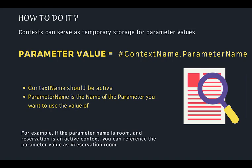Rule number one: it must be an active context. If it is not an active context, your parameter value will go blank — it won't be able to pick up the parameter value you're trying to reference. The parameter name is the name of the parameter whose value you want to use. For example, if the parameter name was 'room' in some other intent and the active context is 'reservation', you reference it as hashtag reservation dot room.